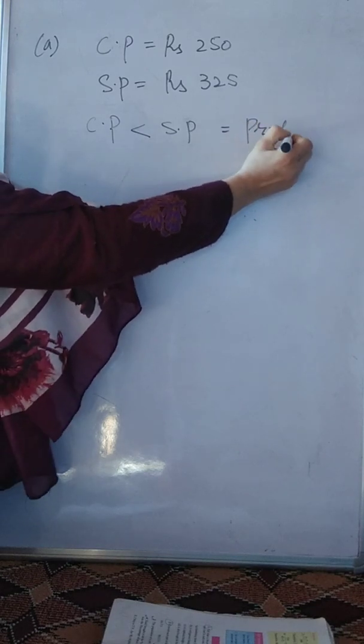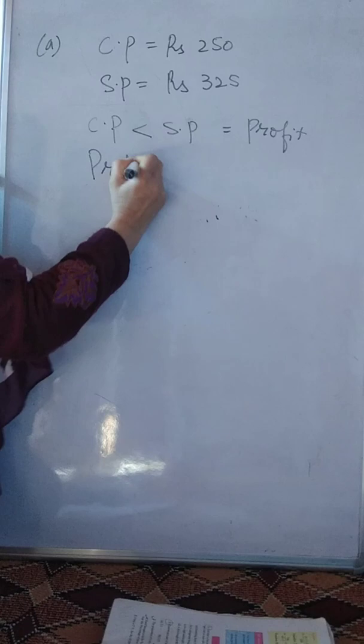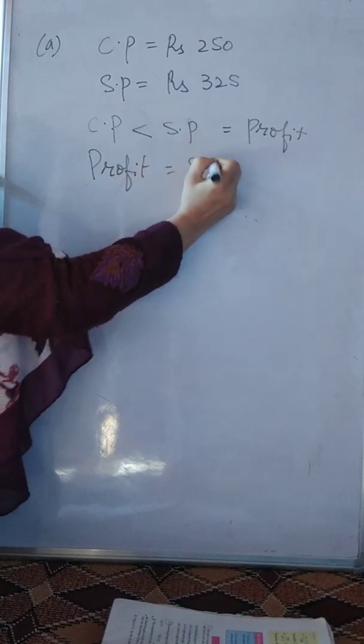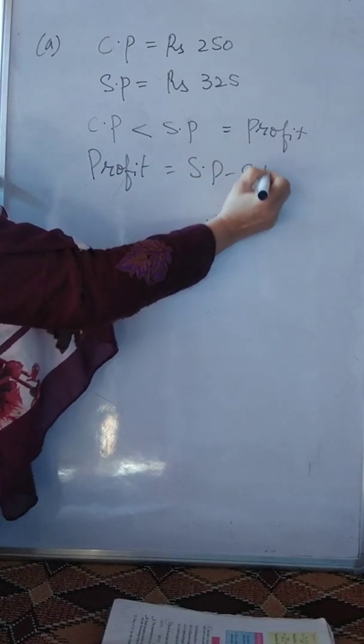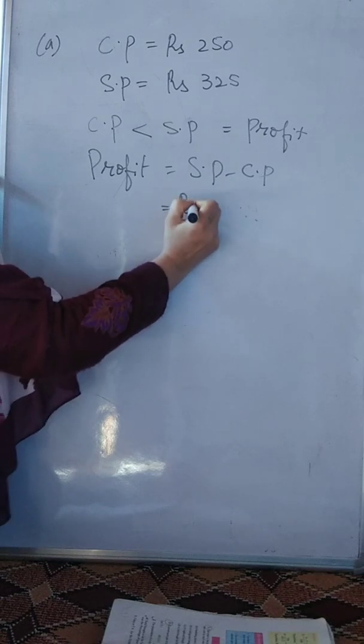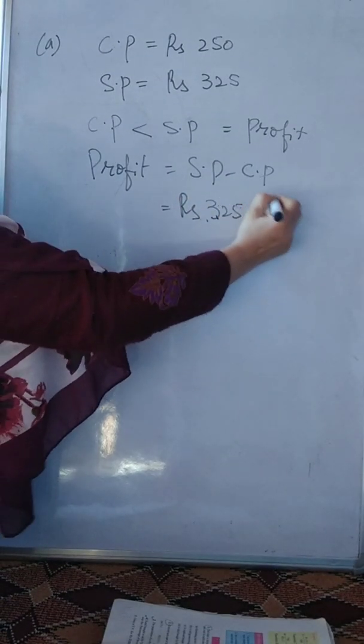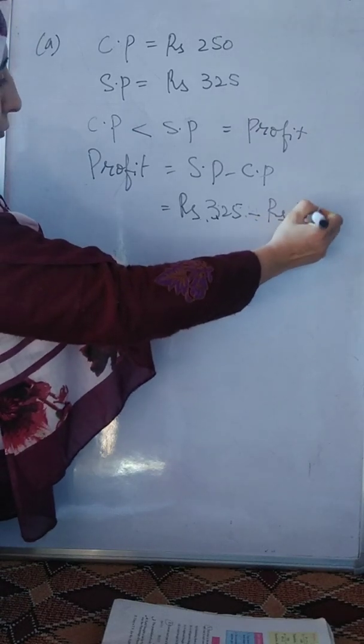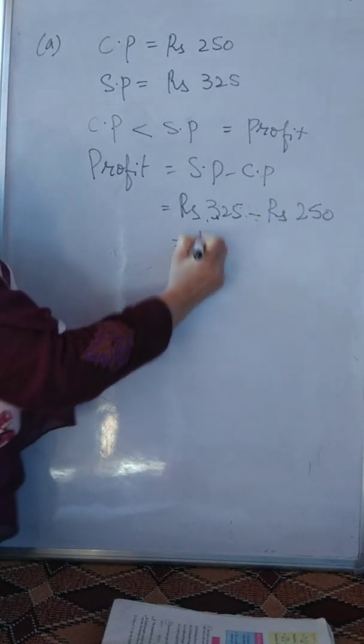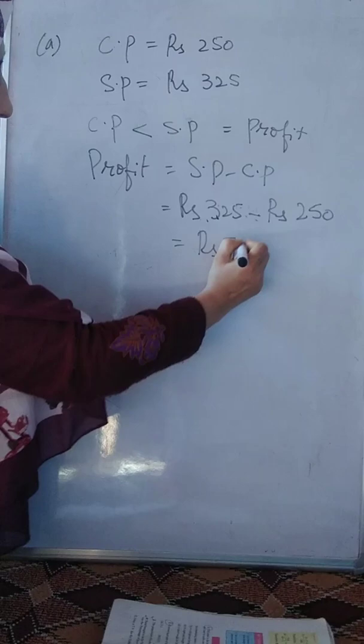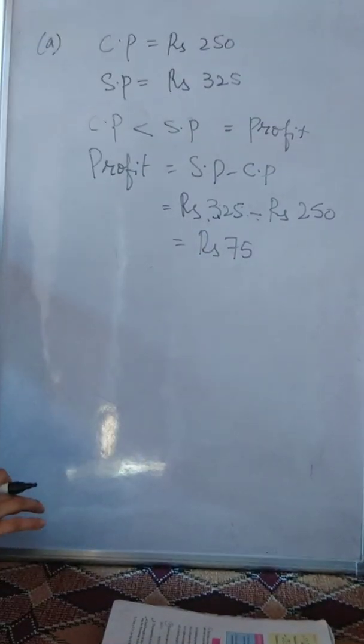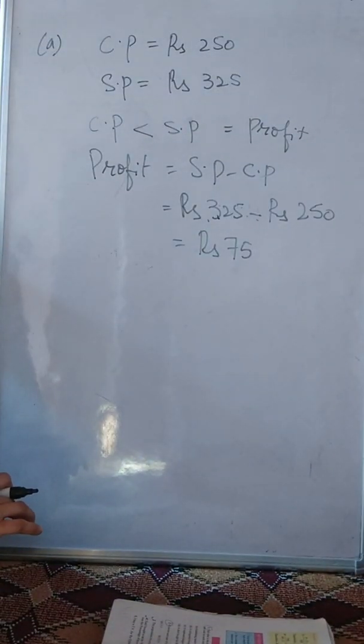Aap profit kitna hai? Profit is equal to SP minus CP, is equal to 325 minus 250 is equal to rupees 75. Iska matlab, hamein profit hoa hai 75 rupees ka.